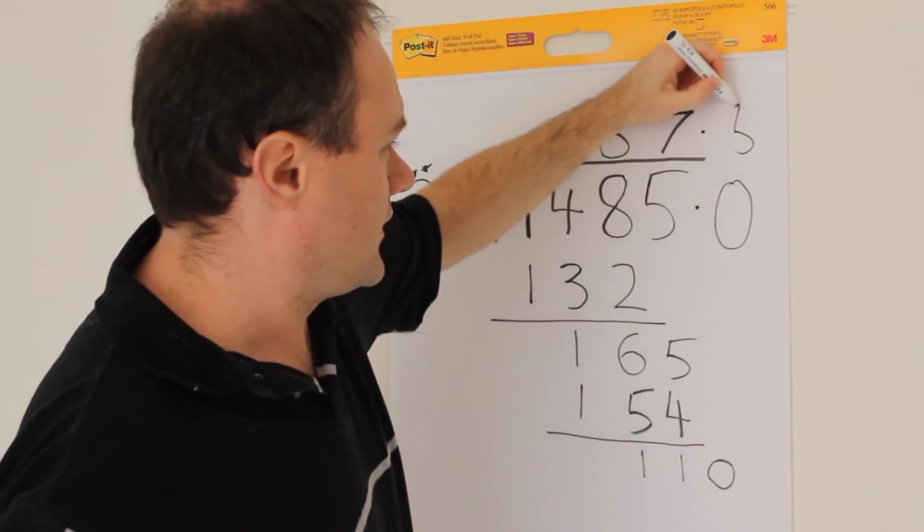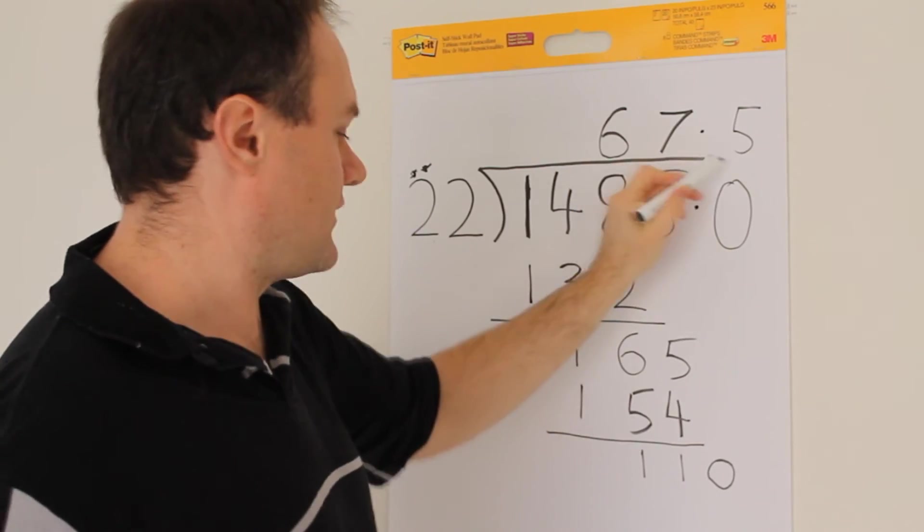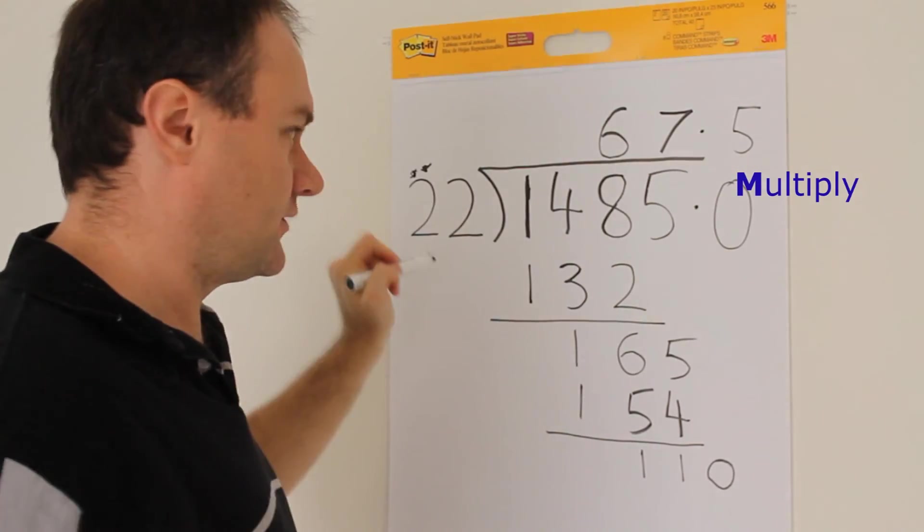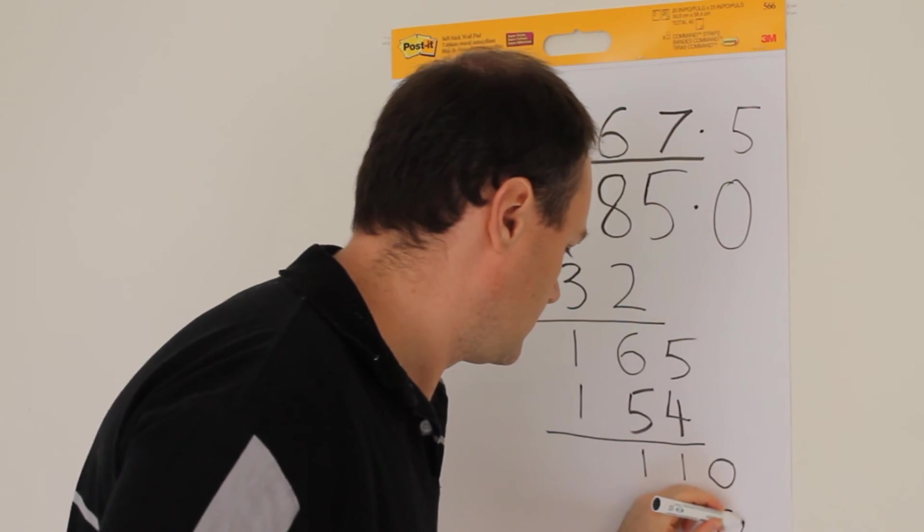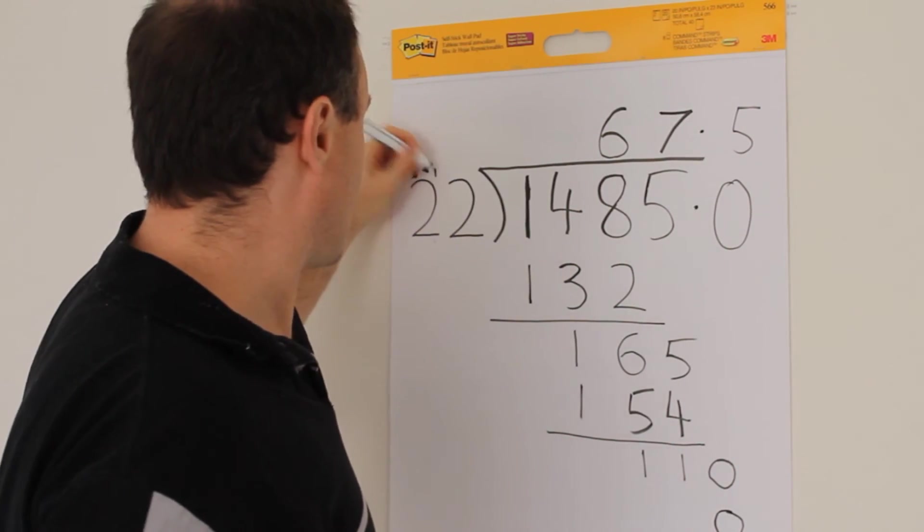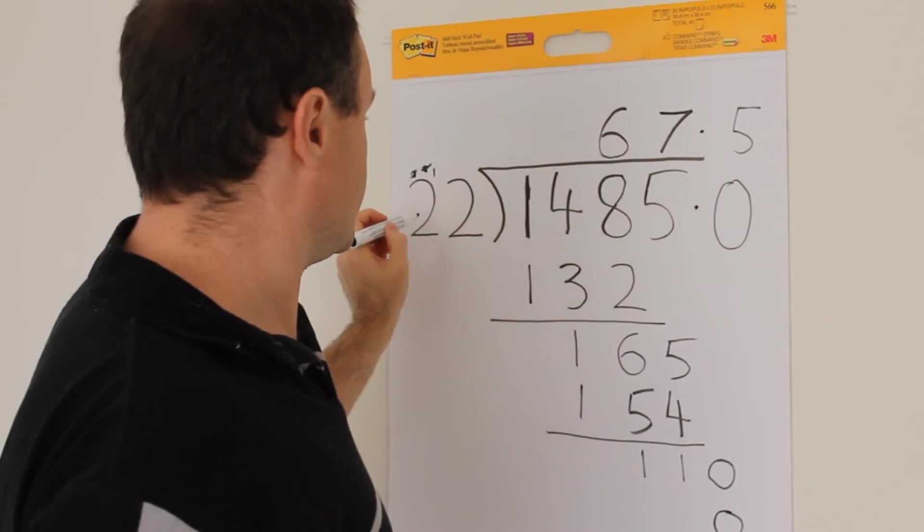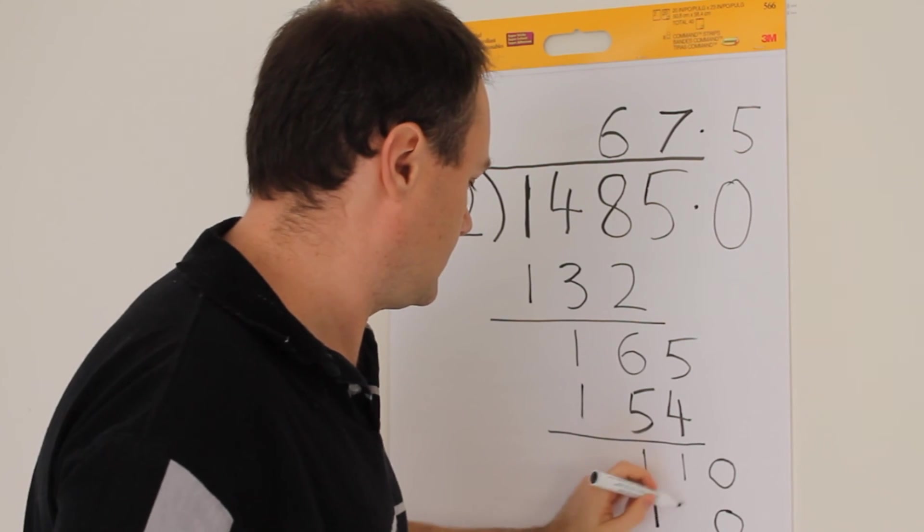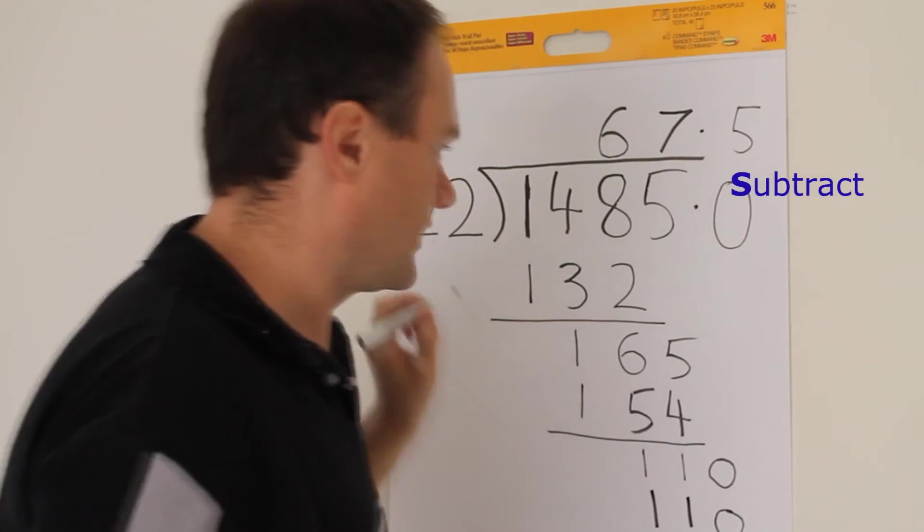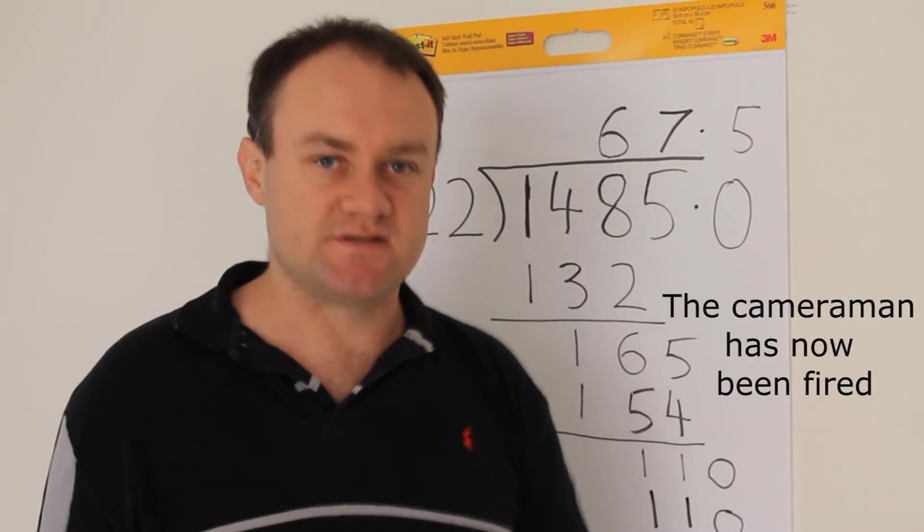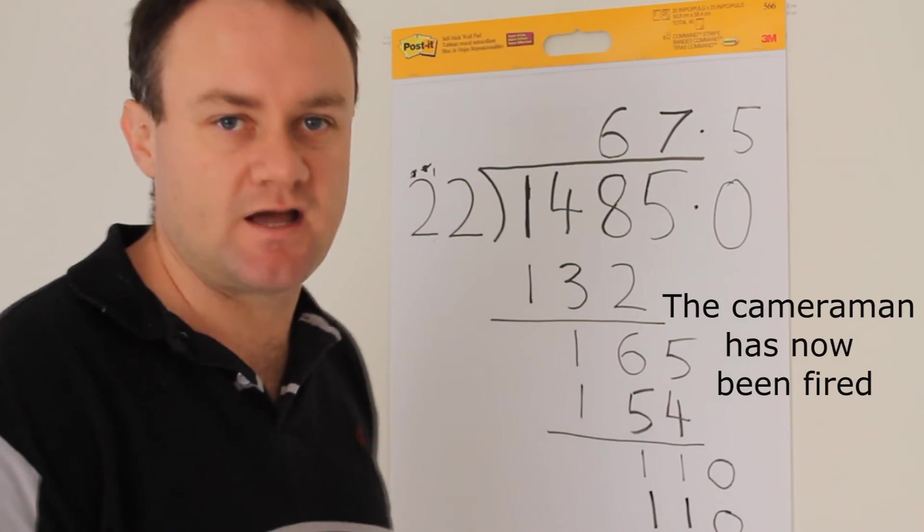So put a 5 here and then multiply. 5 times 22. 5 times 2 is 10. Put down the 0. Carry the 1. 5 times 2 is 10, plus 1 is 11. And then when we subtract, we get a 0, which means there's nothing left over. It has been done perfectly.